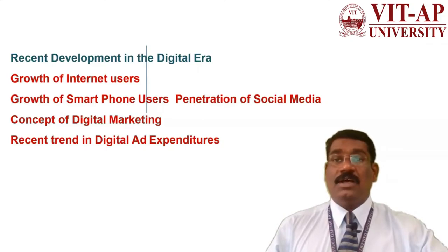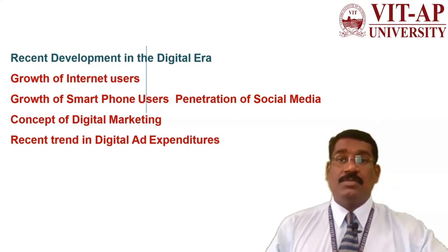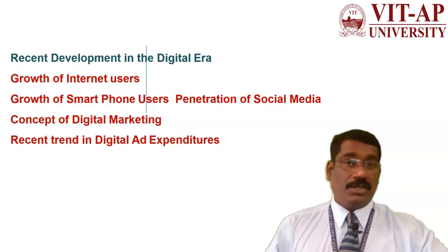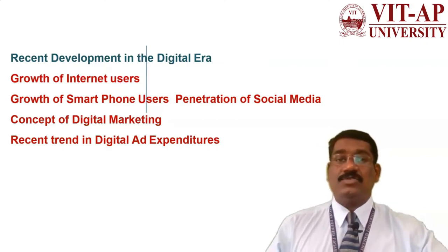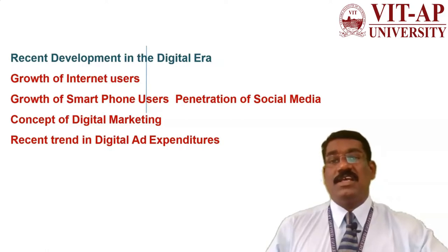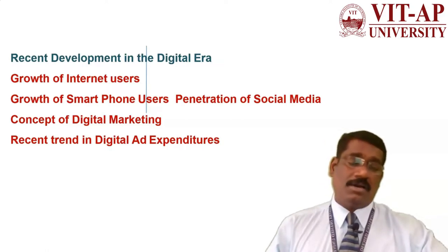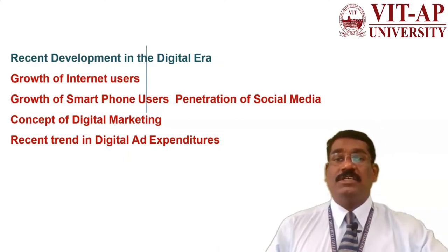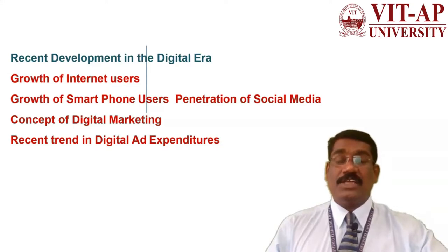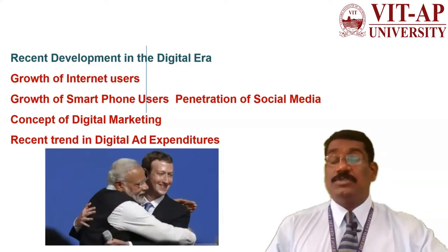The campaign was launched by Honorable Prime Minister Narendra Modi on 1st July 2015. There are nine pillars of Digital India targeted by the government: broadband highway, universal access to mobile connectivity, public internet access programs, e-governance, reforming government through technology, e-Kranti and electronic delivery of services, information for all, electronic manufacturing hubs, and IT jobs creation. There has been a lot of development and initiatives taken by the government of India in this regard.